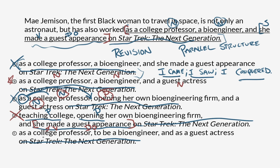Answer E: 'as a college professor' — noun; 'to be a bioengineer' — that's an infinitive verb, the 'to' form of a verb; and 'as a guest actress' — noun. So we've got noun, verb, noun — and that's not parallel.